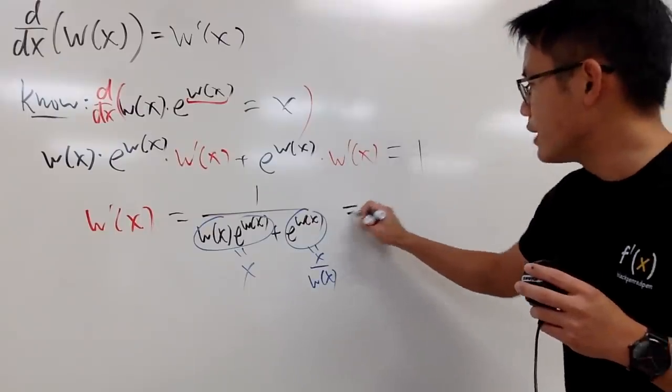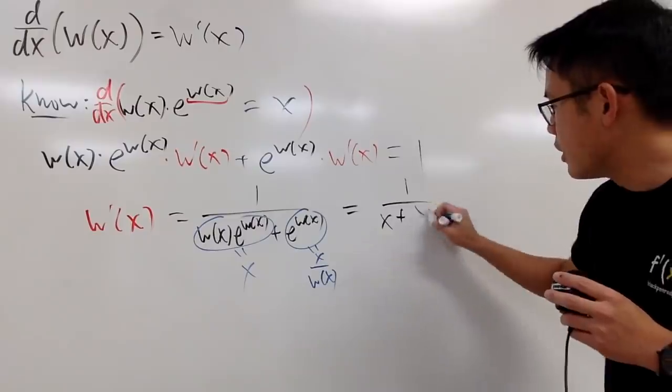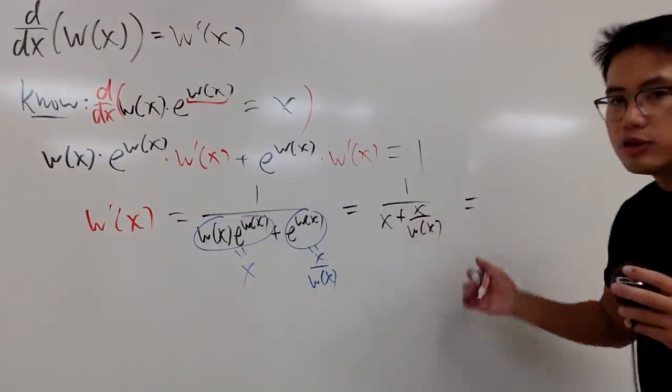And right here, you see, we actually end up with a complex fraction, 1 over x plus x over W of x. Of course, we can just do some algebra.